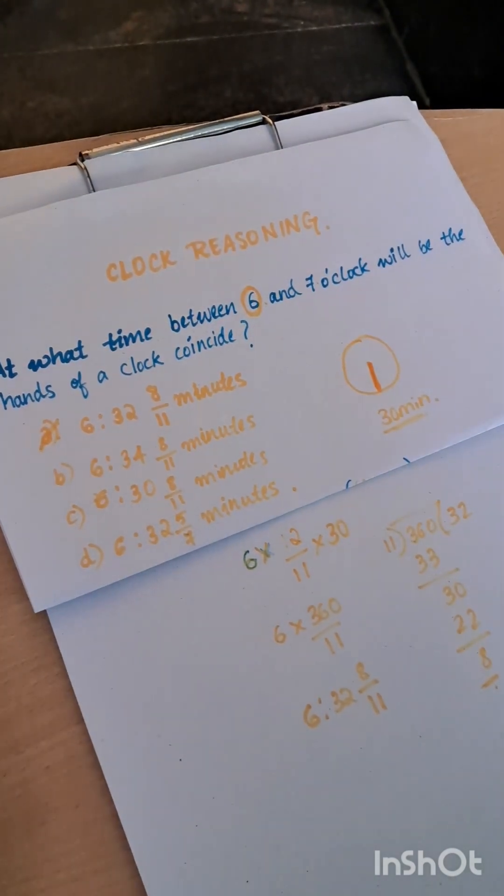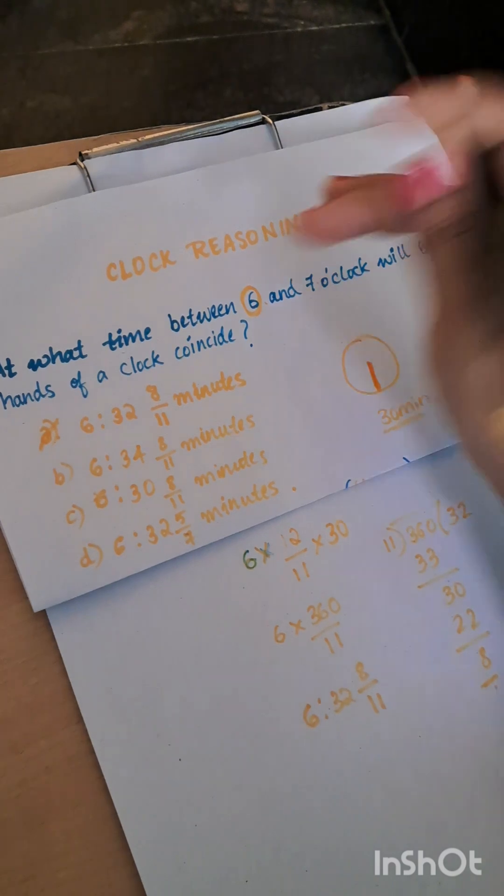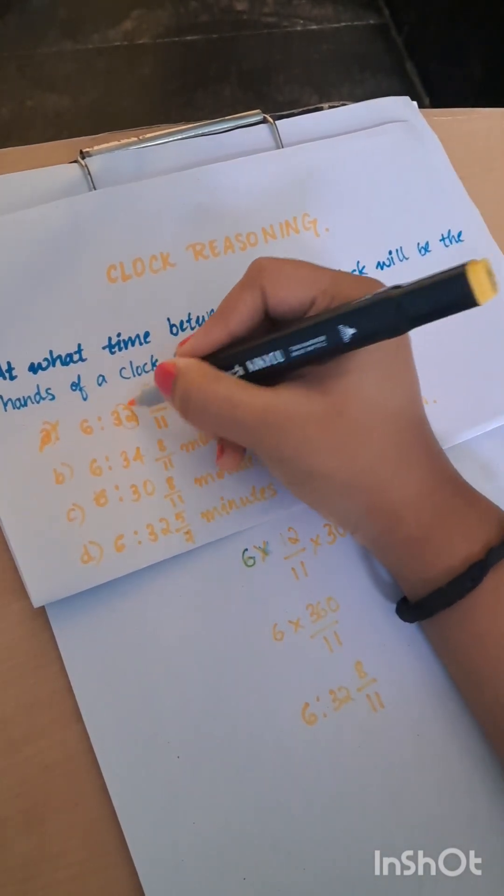Now let us see the same thing using the trick. Whenever we get this kind of question, the trick here is we have to just do the sum of this and this.